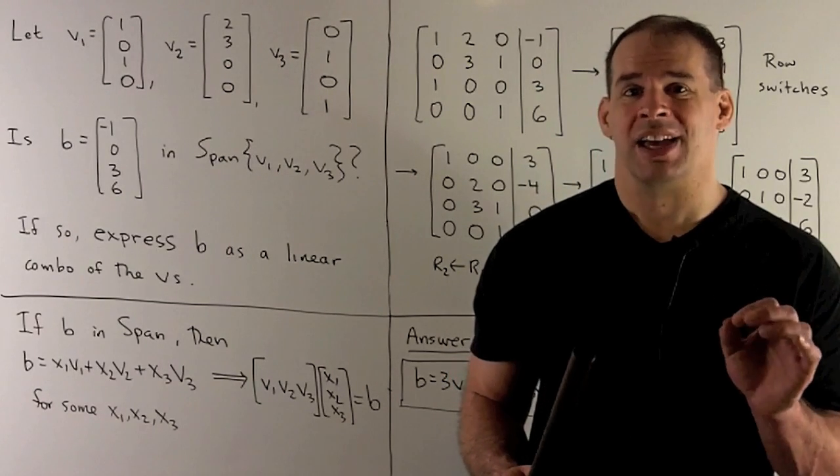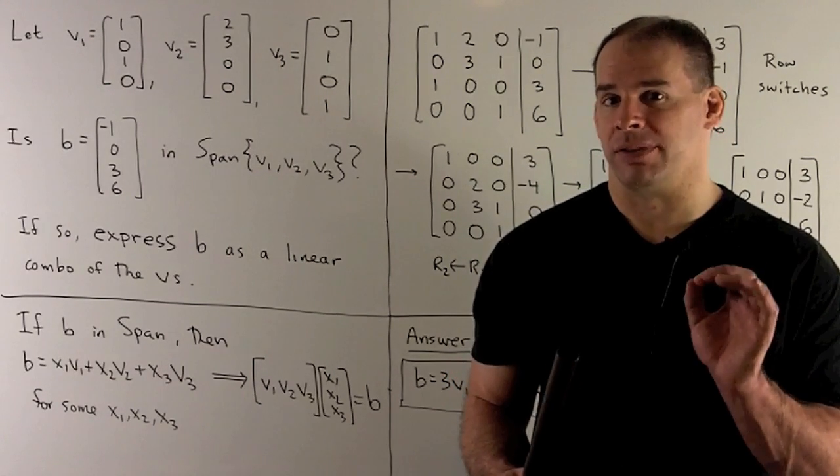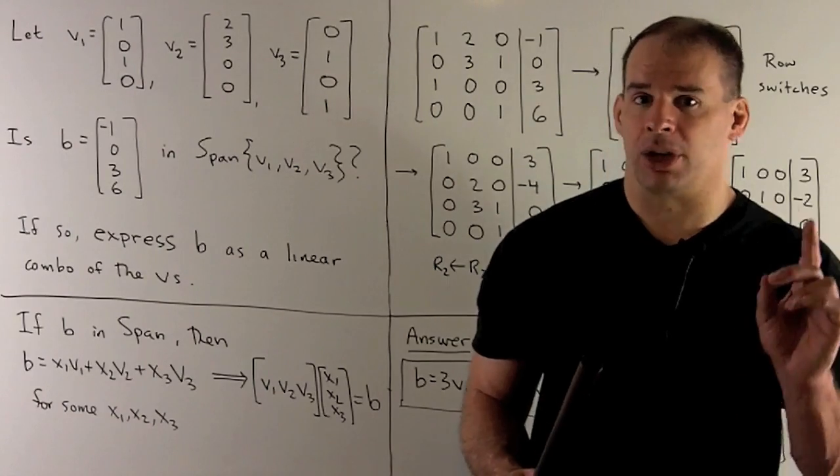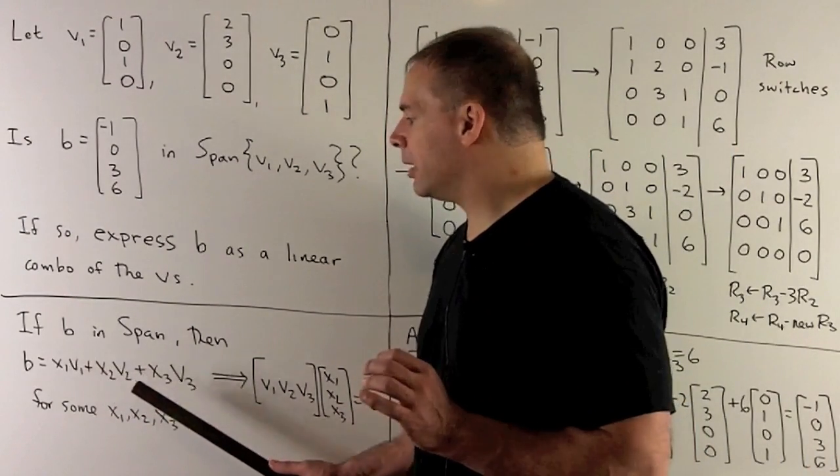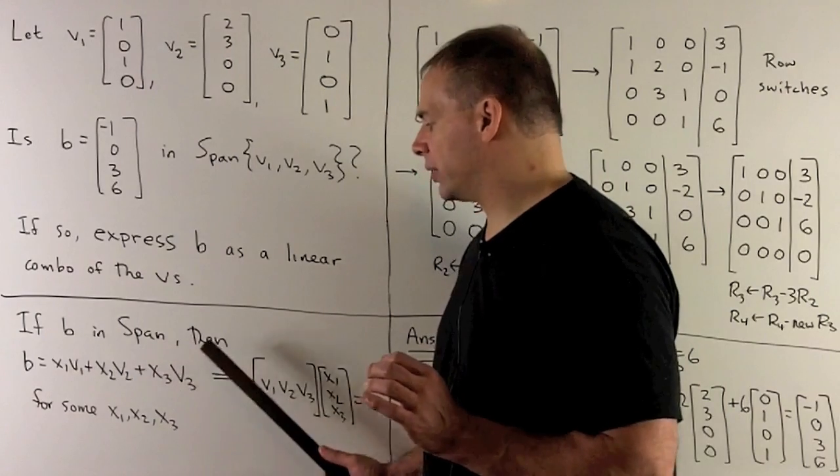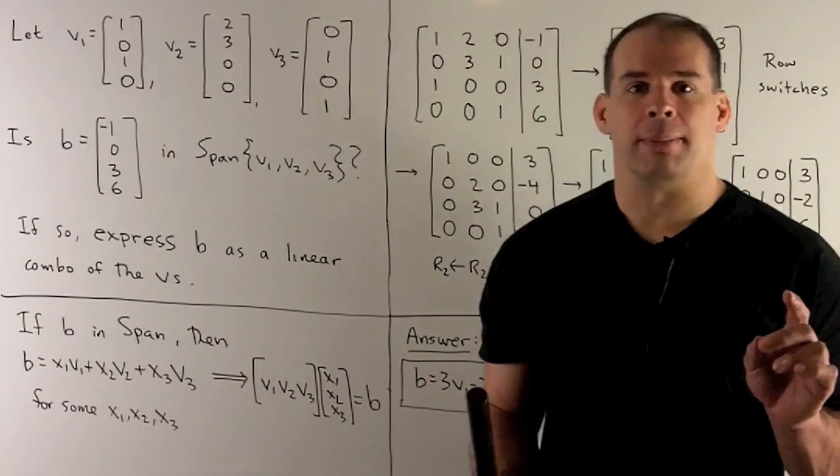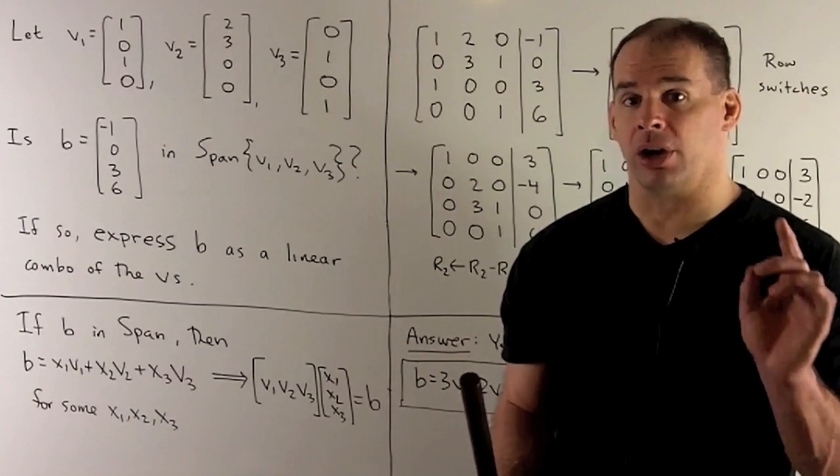So what we're trying to solve is, can I write b as a linear combination of our three vectors? That's going to be the equation b equals x1v1 plus x2v2 plus x3v3, for some x1, x2, and x3 that are numbers.